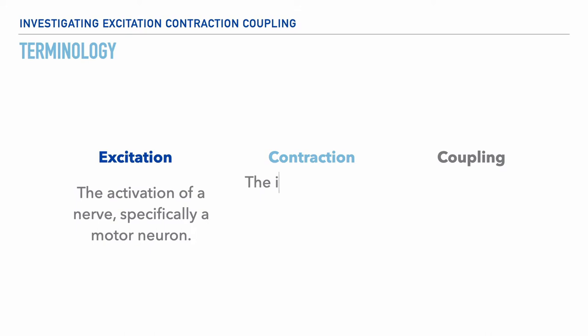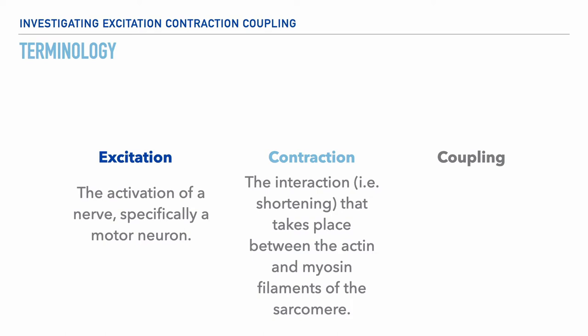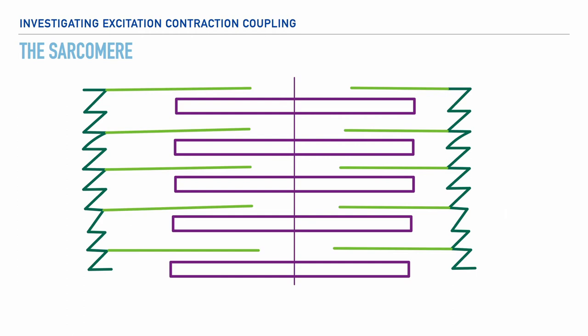The term contraction represents the shortening of the actin and myosin filaments of the sarcomere. And coupling simply refers to the fact that these factors coupled together lead to muscle action.